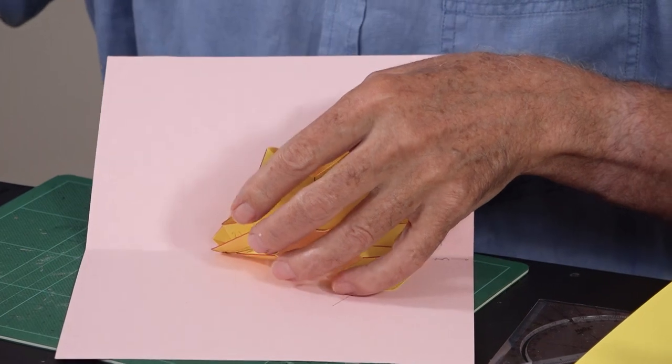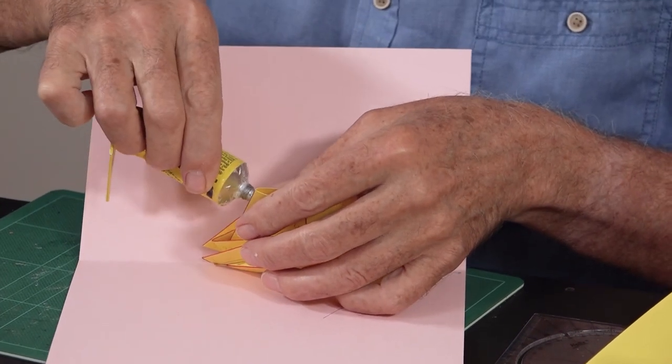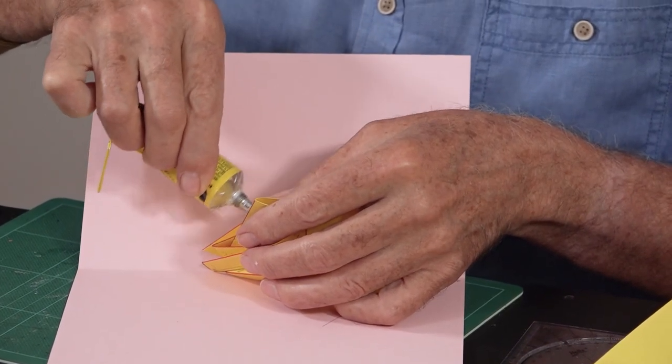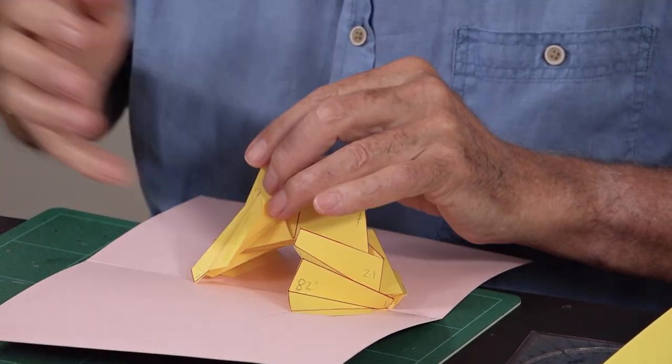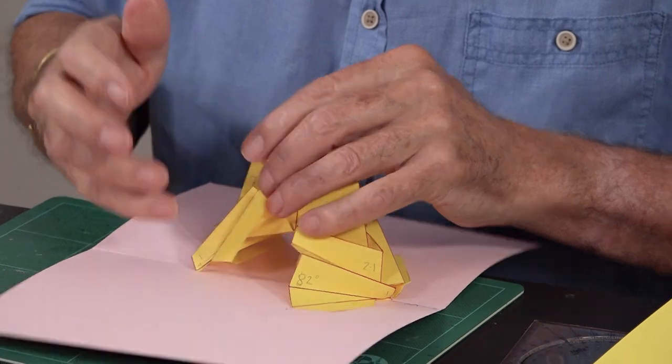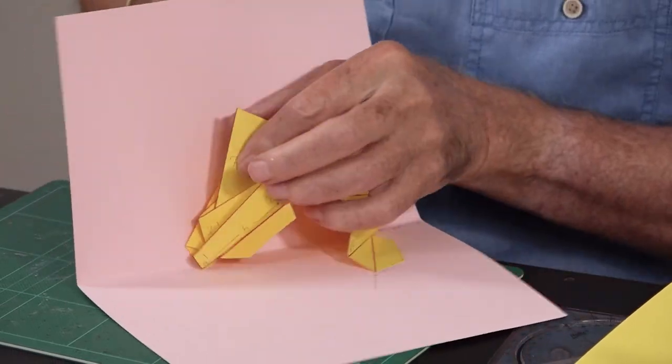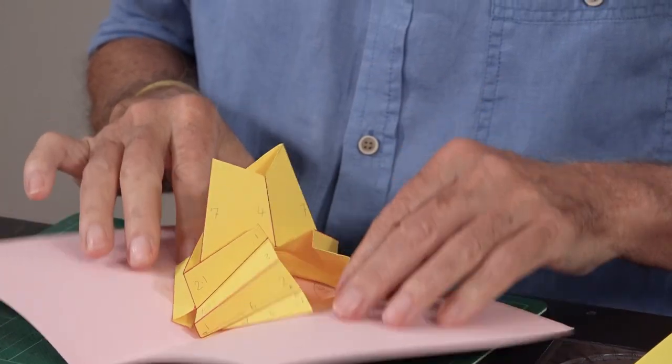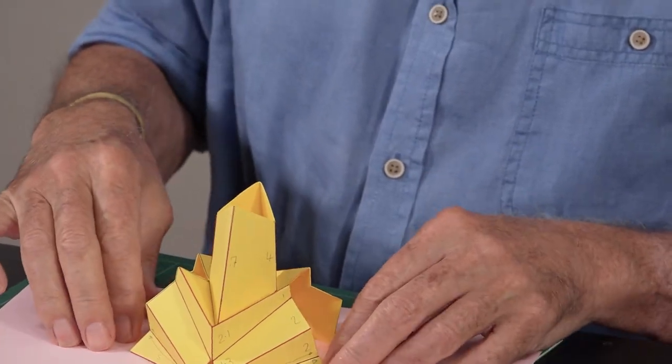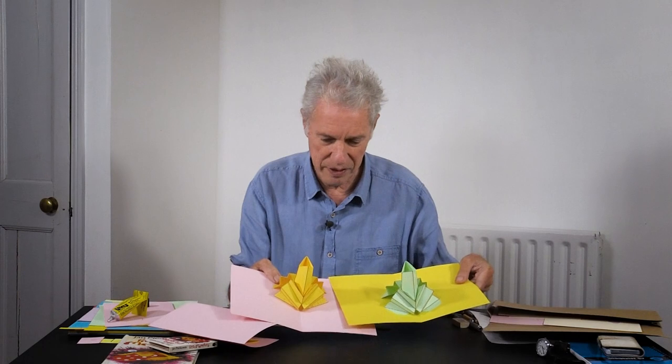Right, now I put glue on those other two tabs. So when I close it, they'll find their natural sticking places. Not too bad. So let's compare it with the other one. They look pretty similar, really.